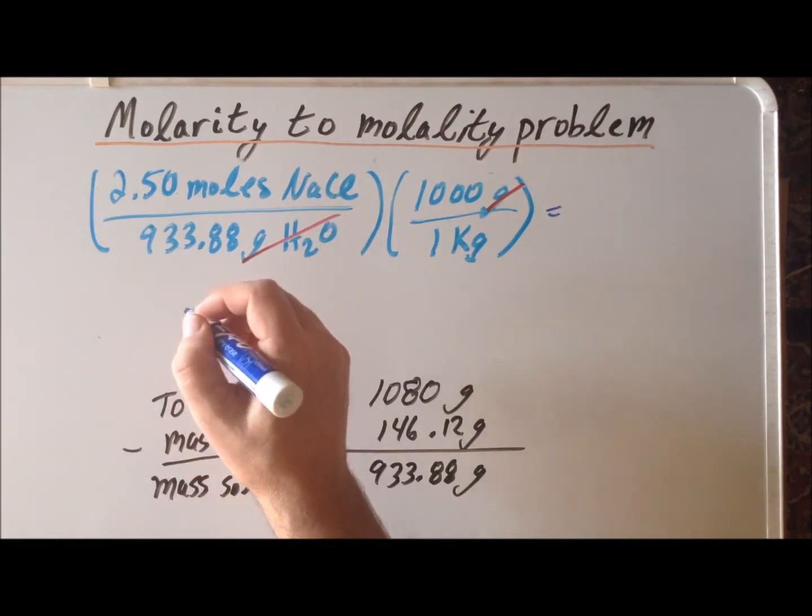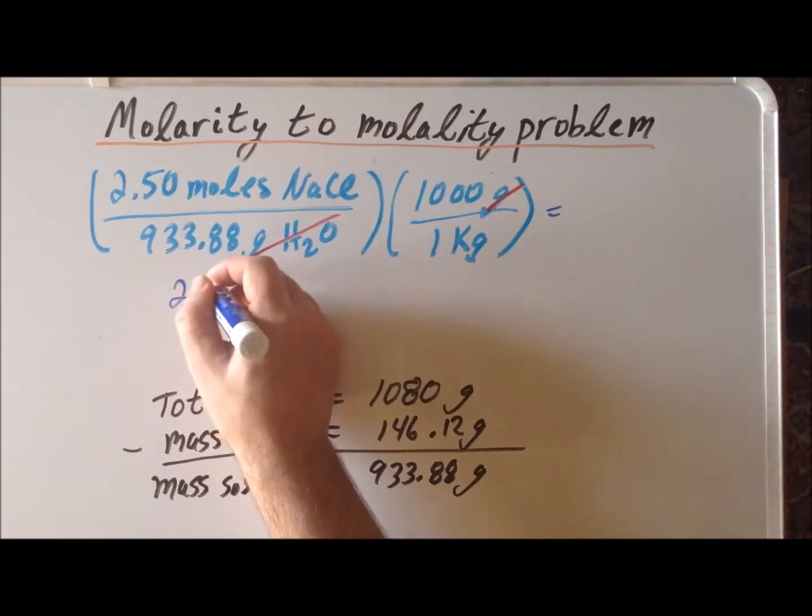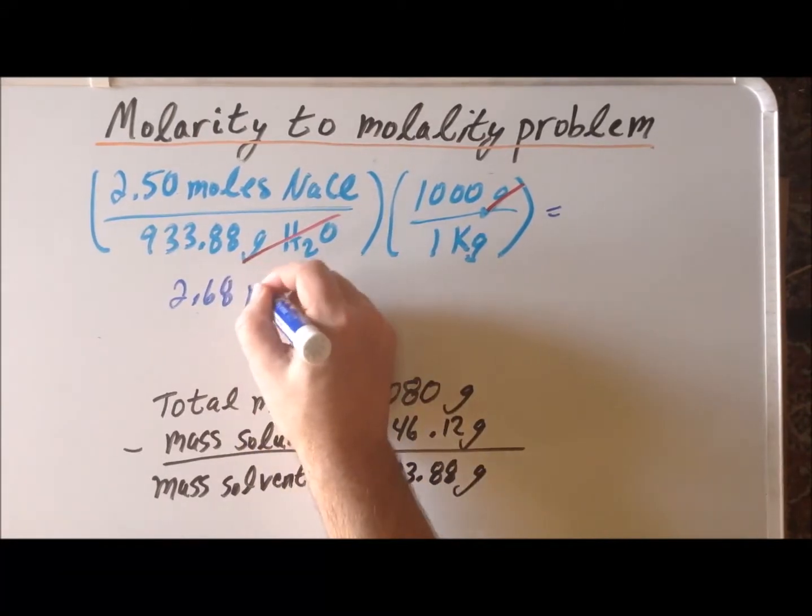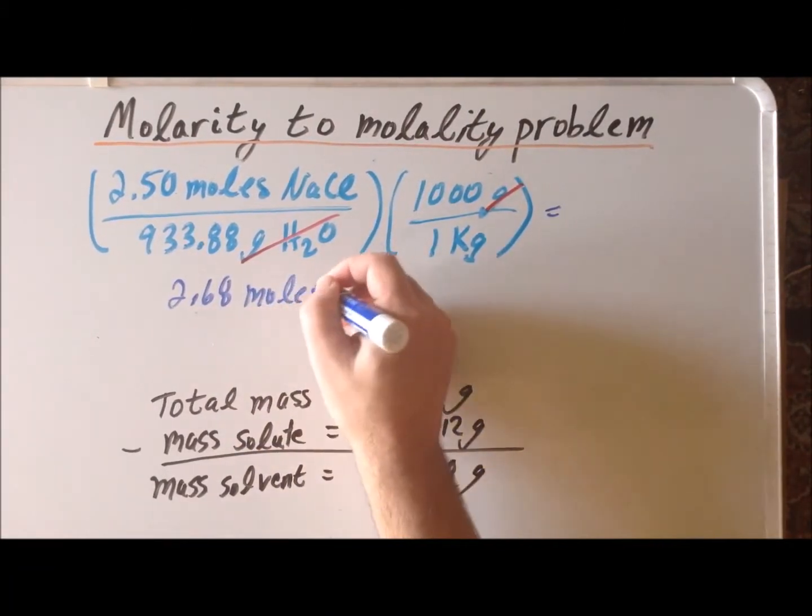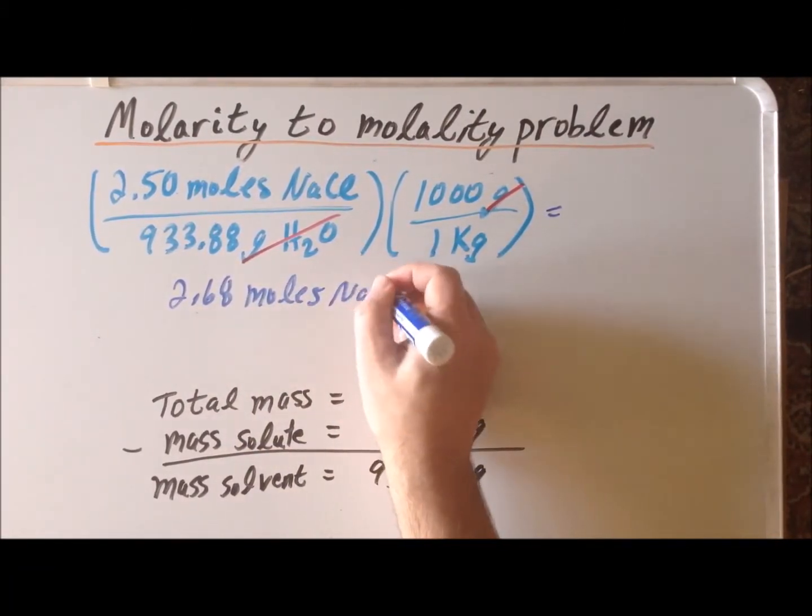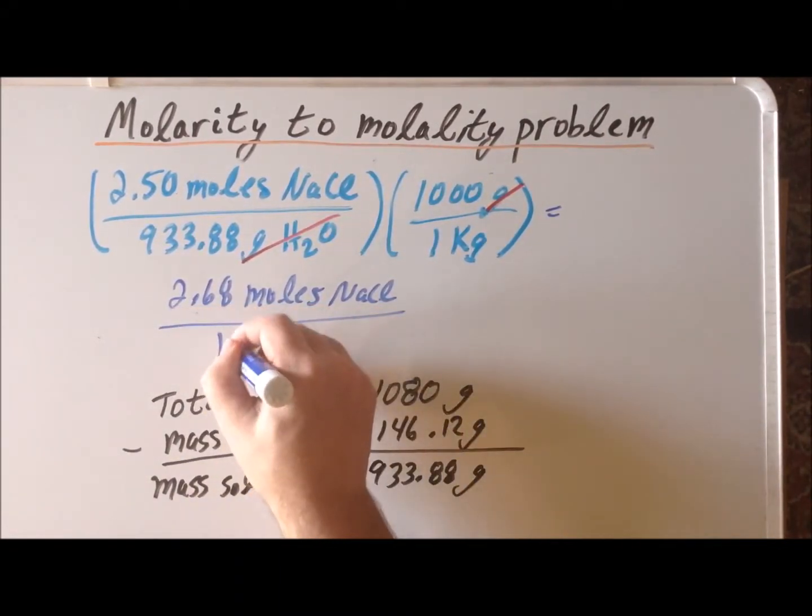And this is found to be 2.68 moles of sodium chloride in 1 kilogram of solvent.